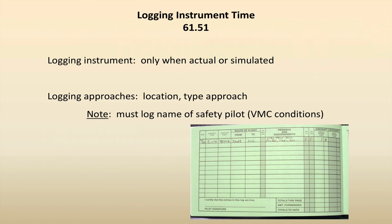Logging instrument time, 61.51 — you can log actual or simulated instrument time in your logbook. Actual means going through the clouds, through what we call IMC — instrument meteorological conditions — when ceilings are less, when you're in the clouds, when visibility is less than VFR, and you're in actual instrument conditions. As an instrument student pilot, you would need to have your instructor with you to do that. You can also log simulated instrument time, such as wearing a hood with an instructor next to you or a safety pilot.